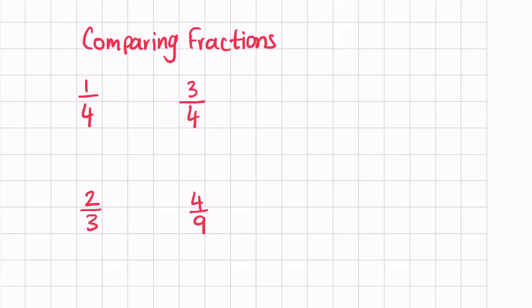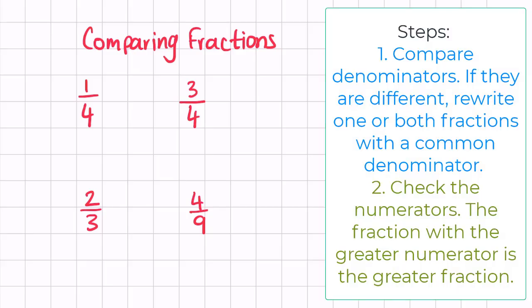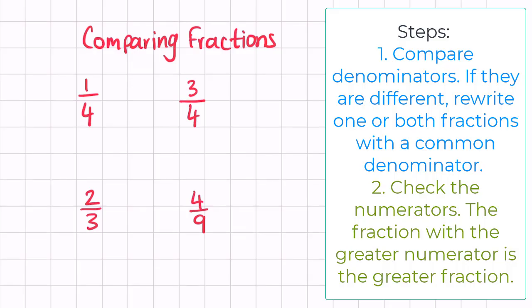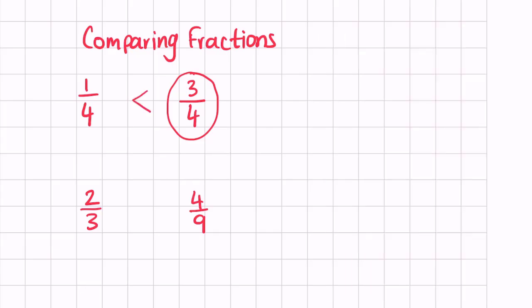So let's have a look at the first pair of fractions. We have a quarter and three quarters. Now this one is pretty obvious — we can see that both fractions have a denominator of four, they are both out of four. So we can say three quarters is larger than a quarter. You can also write down the inequality sign to show that three quarters is larger.